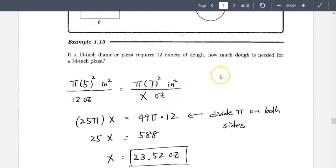Okay chapter, the first example. If a 10 inch diameter pizza requires 12 ounces of dough, how much dough is needed for a 14 inch pizza. Now so what we need to find out is we're using the same idea of proportion but with area included, with our geometry included.